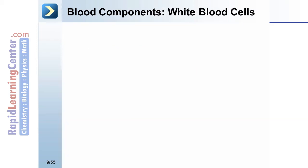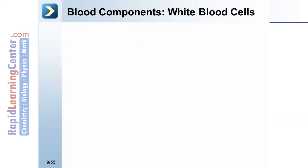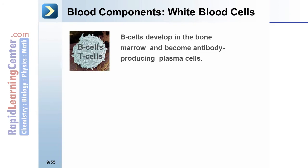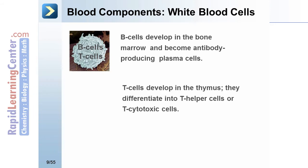White blood cells include B and T cells. B cells develop in the bone marrow and become antibody-producing plasma cells. T cells develop in the thymus and differentiate into T helper cells or T cytotoxic cells.